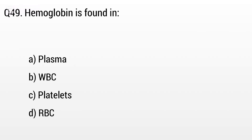Question 49. Hemoglobin is found in: Option A: Plasma, B: White blood cells, C: Platelets, D: Red blood cells (RBC). The right answer is option D, RBC.